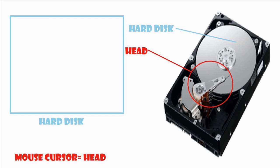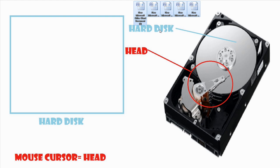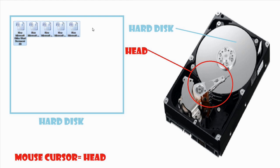Let's start this demonstration by imagining ourselves writing an essay. The essay will be represented by these five Microsoft Word icons — these five icons are data. Let's imagine that it's data, and the data will now be stored on the hard disk. This is data associated to one document.